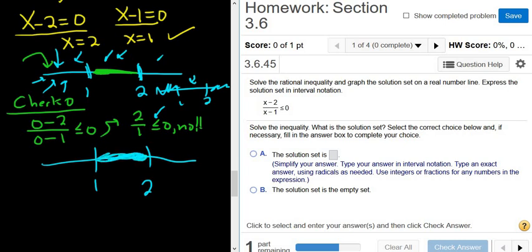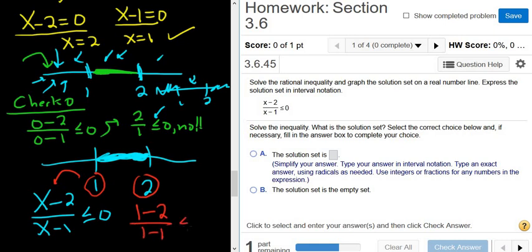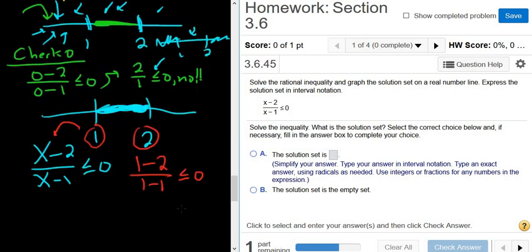The last thing to figure out is where the parentheses and brackets go. So let me rewrite the problem, x minus 2 over x minus 1 less than or equal to 0. So the surefire way to figure out if it's a parentheses or a bracket is to actually take these numbers and plug it back into your inequality. For example, if you plug in 1, you get 1 minus 2 over 1 minus 1 less than or equal to 0. So that means you have negative 1 over 0, less than or equal to 0. That doesn't make any sense. You can't have 0 on the bottom, so you have a parentheses. And the parentheses always face the shading.